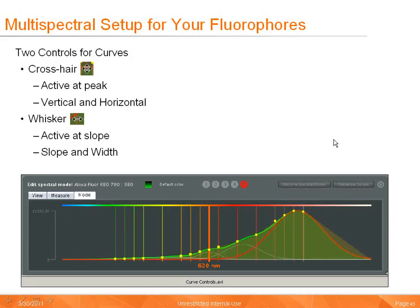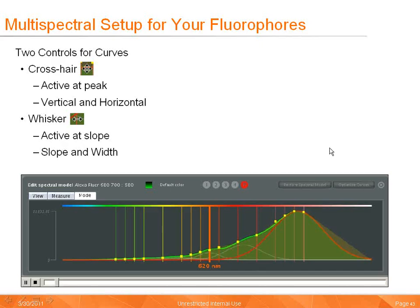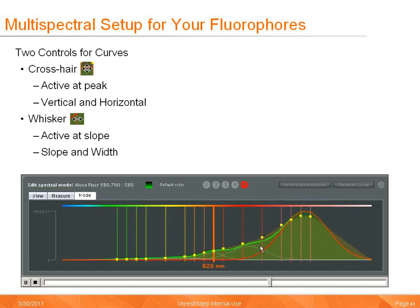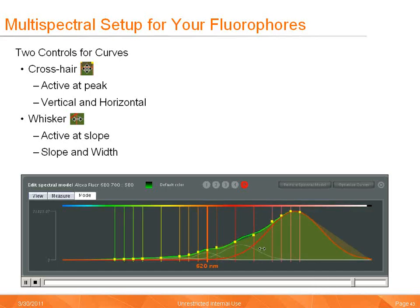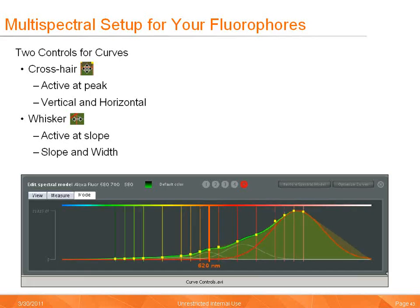There are a couple of nuances for the curve preparation that should be noted. There are two controls for adjusting the curves. The first control is active when the cursor is positioned near the peak of an active curve and shows as a crosshair — this allows for vertical and horizontal positioning of the curve. The second control is active when positioned at the slope of an active curve and shows as a whisker — this adjusts the slope and width of the curve. The red Gaussian should be adjusted to set the positioning of the green Gaussian so that it matches the actual data.